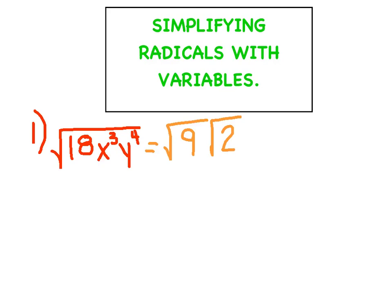Now I want to do the same thing for the x cubed term — break it into a perfect square and not a perfect square. I'm going to say that's the square root of x squared and the square root of x. Why is that true? When we multiply, we add the exponents, so this 2 and this 1 total the 3 that we're looking for.